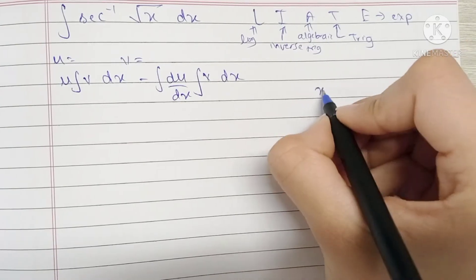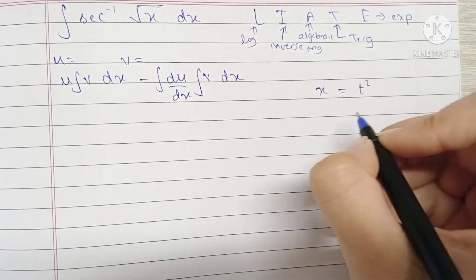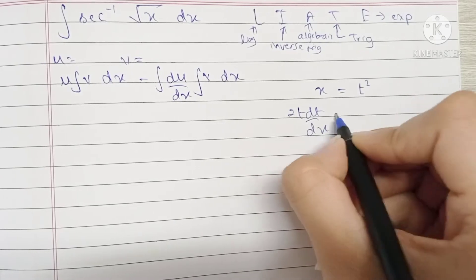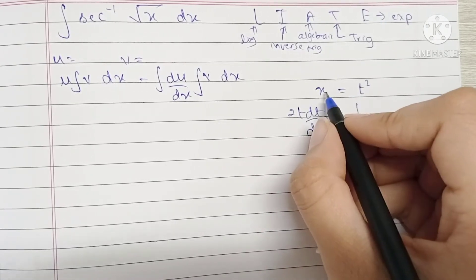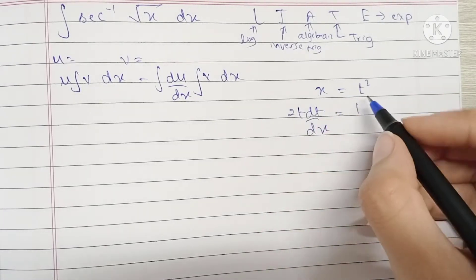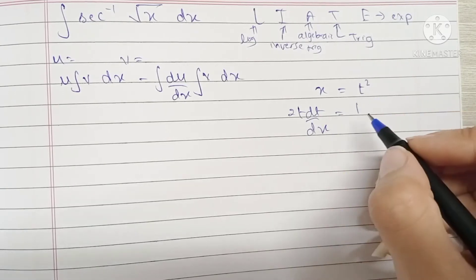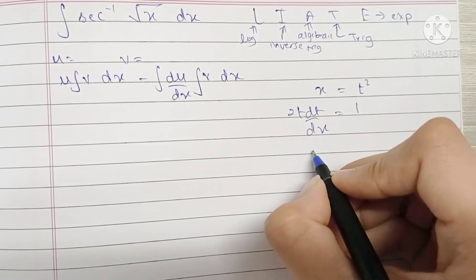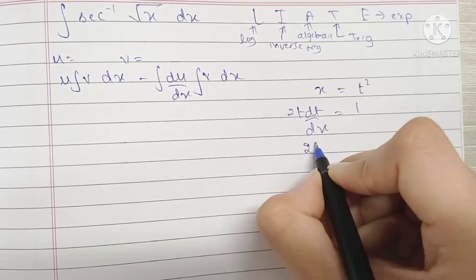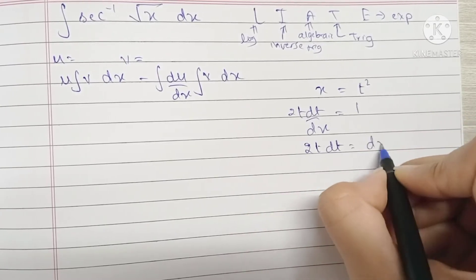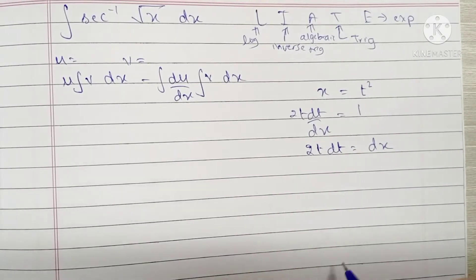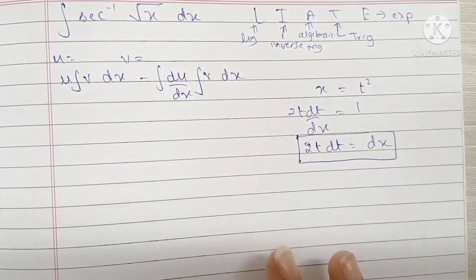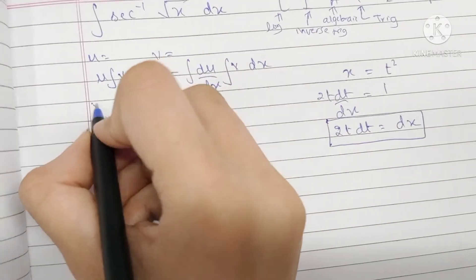First of all, we're going to let x equal t squared. Differentiating both sides: 2t dt/dx equals 1, so dx becomes 2t dt. This is what we're going to substitute into the integral.